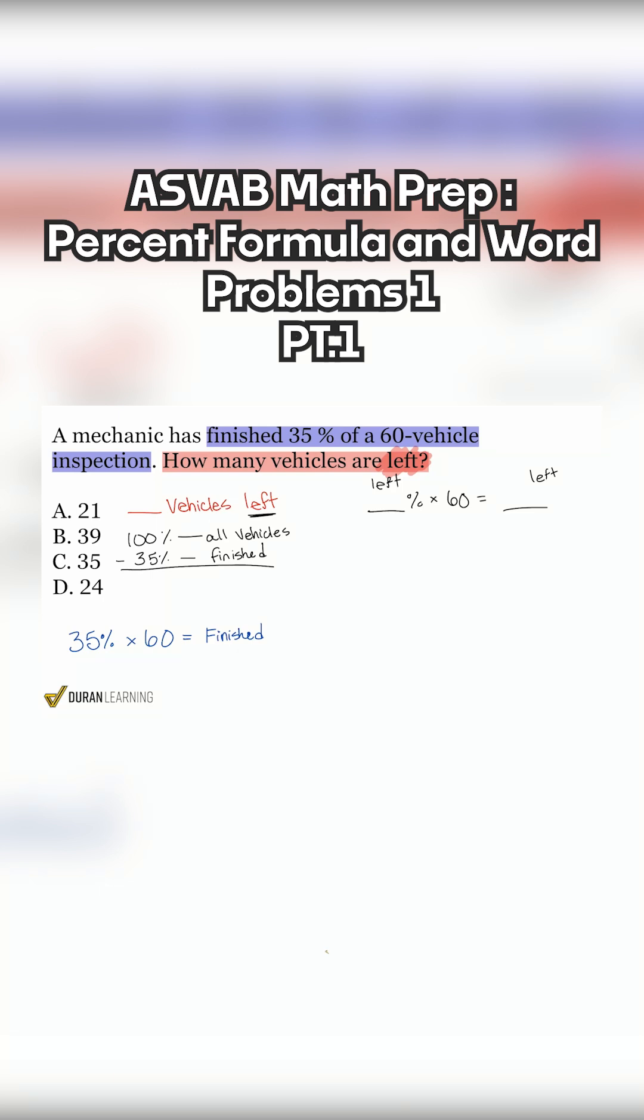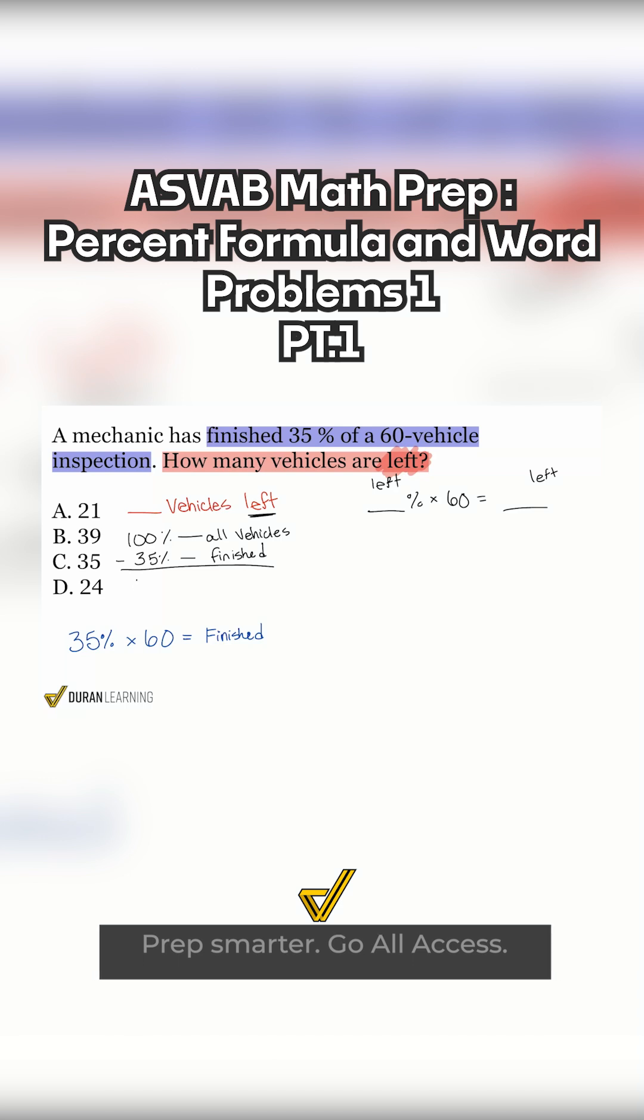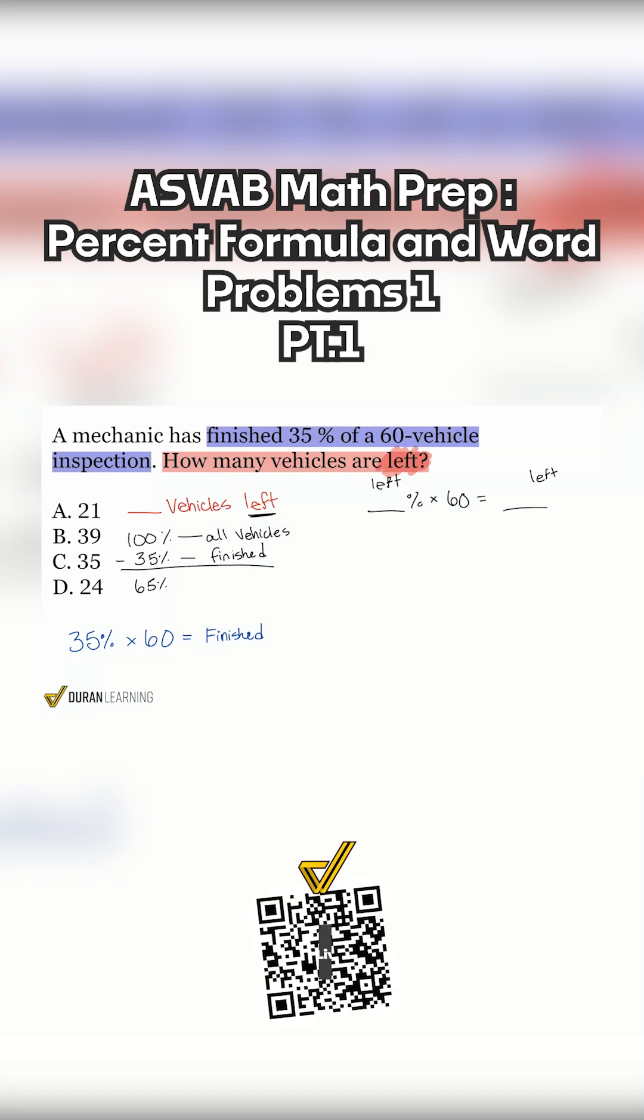And so 100 minus 35%, that's going to be 65%. So what we know about this is that we have 65% of the vehicles left. So 65% left. Then we'll plug that in.